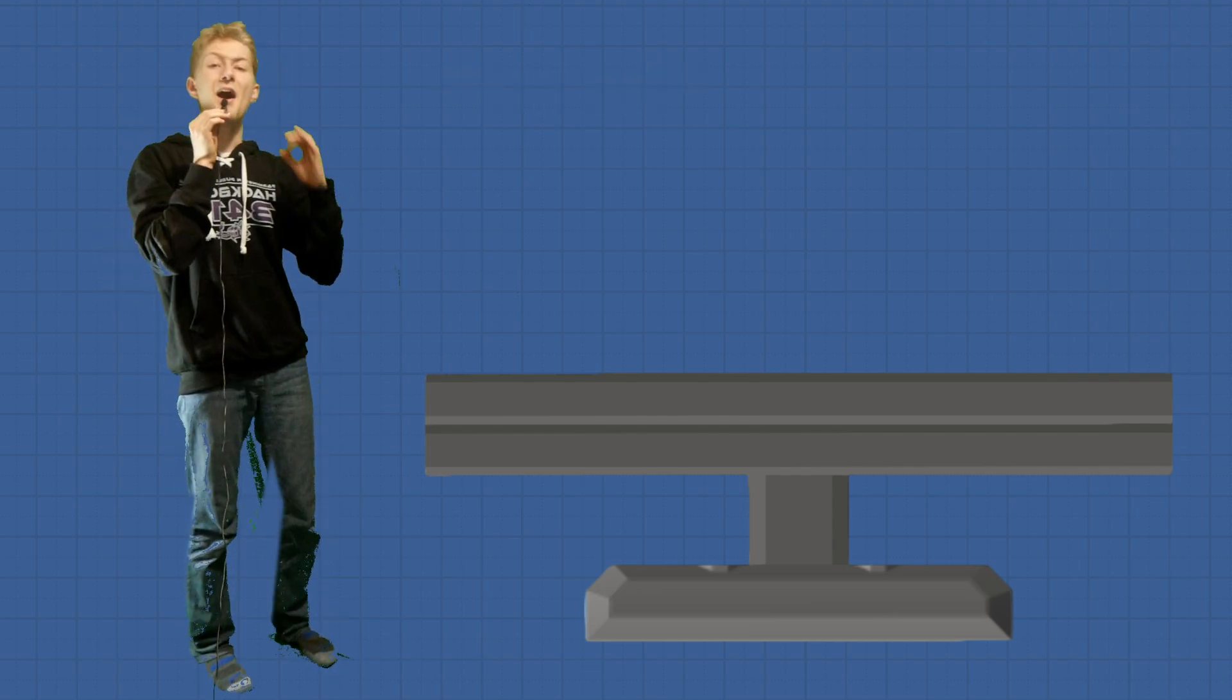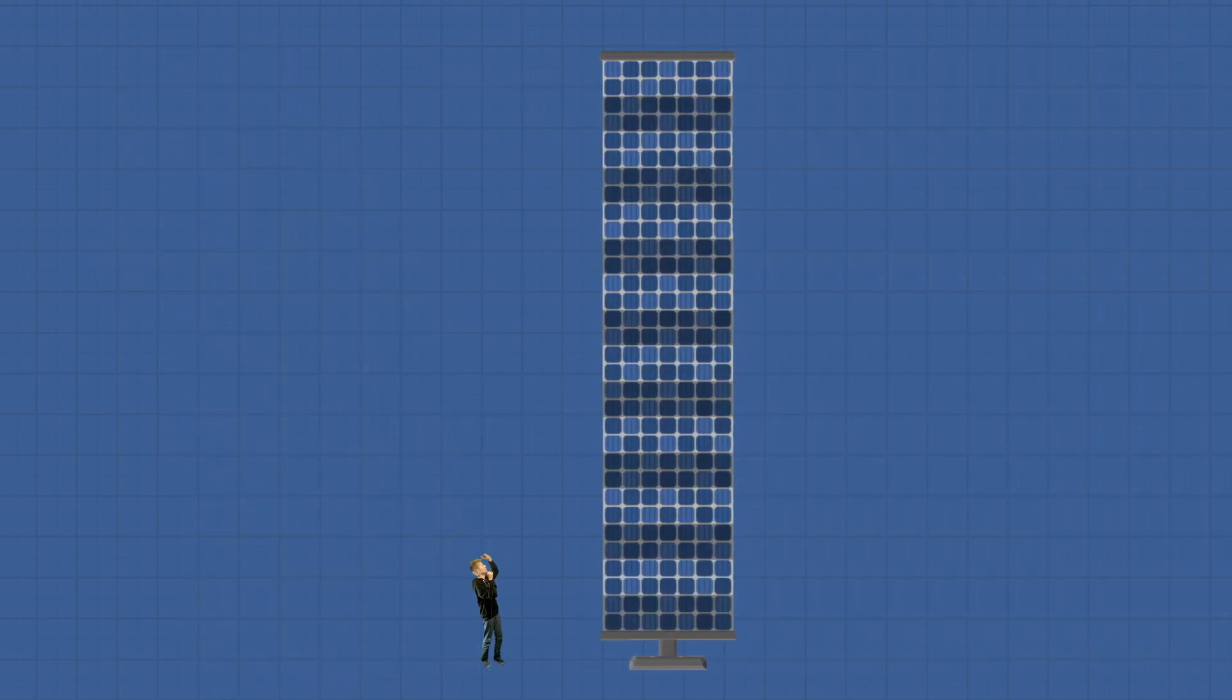Let's take a look at the large solar panel. When it's retracted, it stands at half a meter tall. However, when extended, it reaches up to a staggering 13 meters.